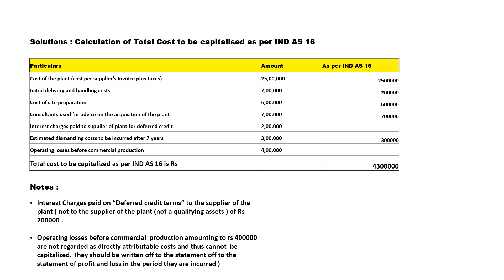Consultation fees for advice on the acquisition of the plant — yes, this is related, so we include 7 lakhs. Next, interest charges paid to the supplier for deferred credit — this is not directly related to the installation of the new plant, so we are not going to include this. We will mention it in our working note.